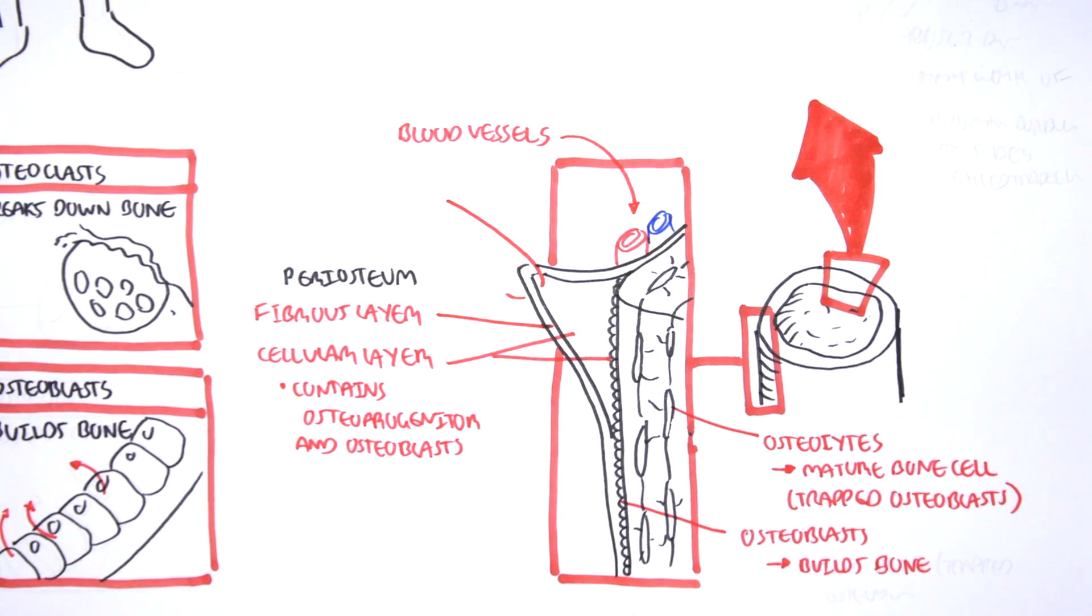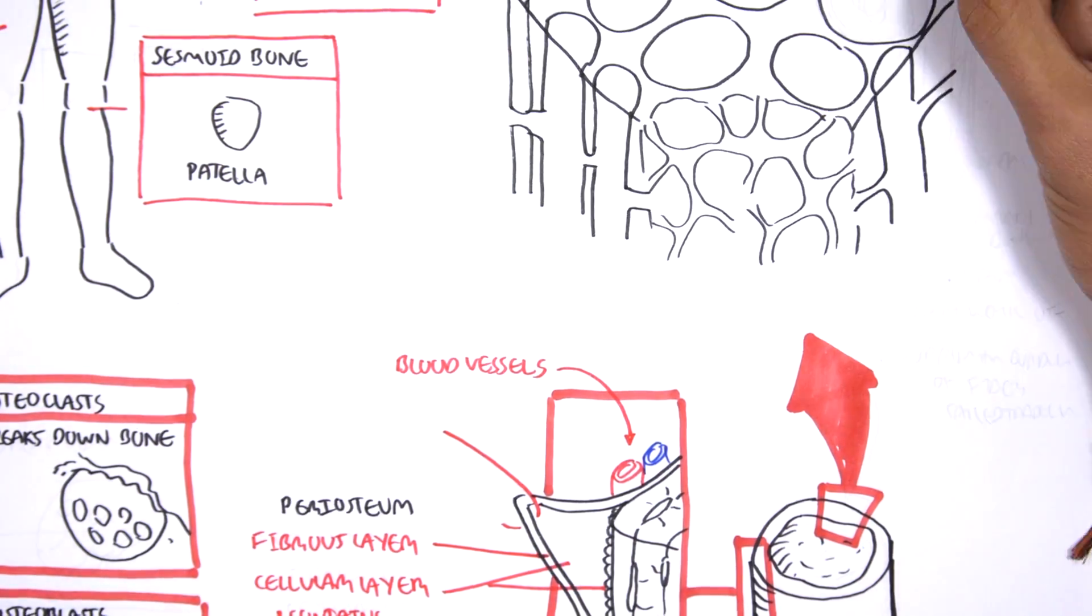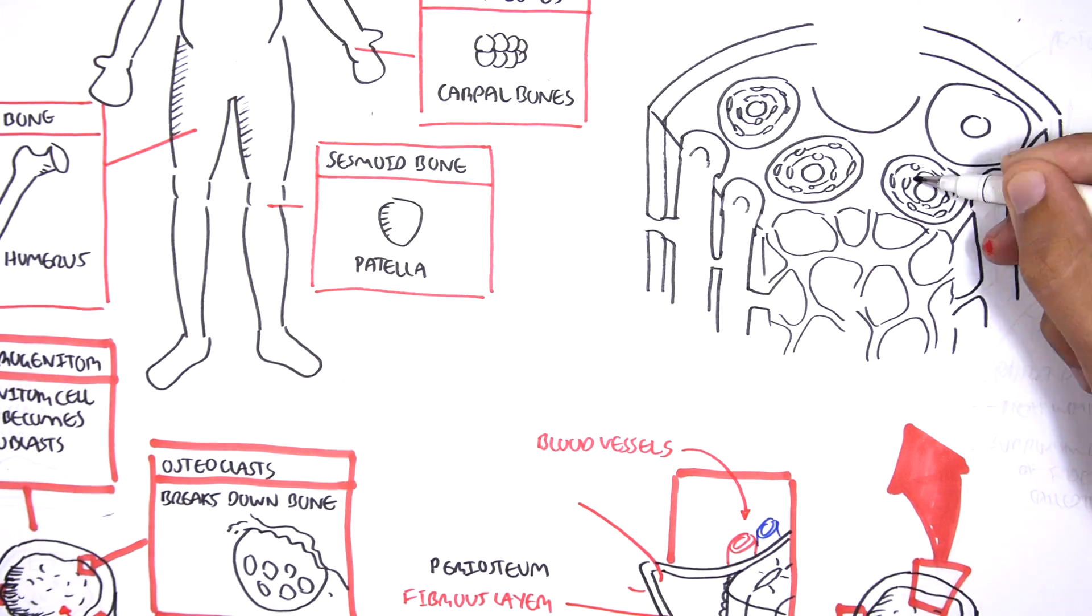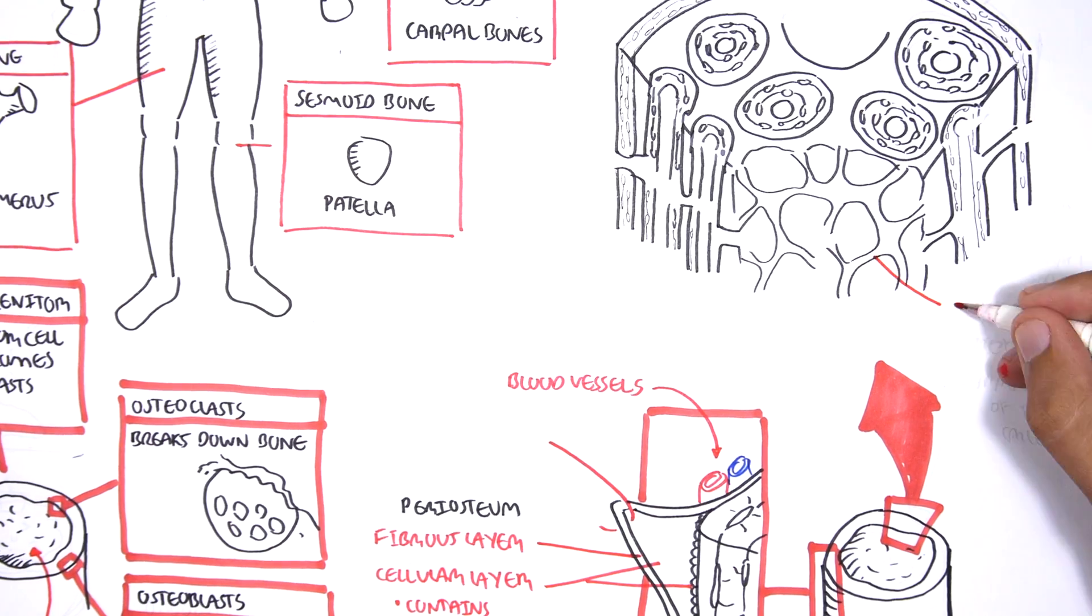Now, let's zoom more closer to the compact bone and spongy bone area to look at how bone is organized from a different angle. Here again is the spongy bone, which is the inner bone, and then we have the outer compact bone, the hard bone.